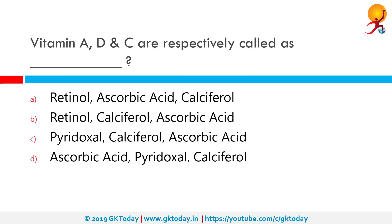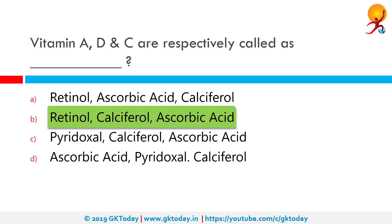Vitamins A, D and C are respectively called retinol, calciferol and ascorbic acid. Vitamin A is also known as retinol because it produces the pigments in the retina of the eye. Vitamin D is a group of fat-soluble psychosteroids. Vitamin C is also known as ascorbic acid and is necessary for growth, development and repair of all body tissues.